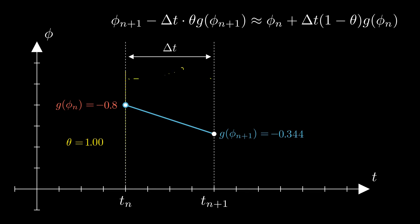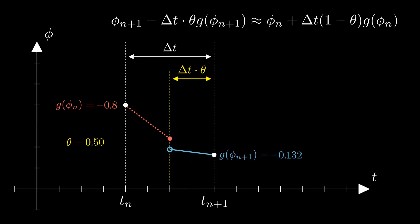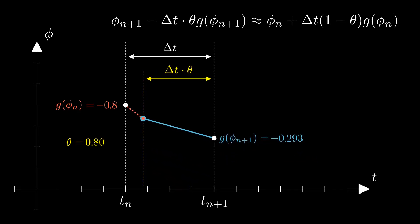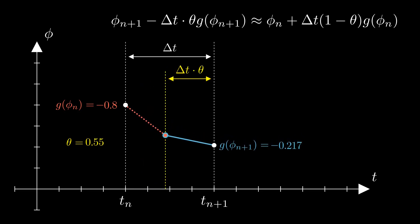Now let's try theta equals 0.5. This is the same as extrapolating backwards only by theta times delta t from phi_n+1, and extrapolating forwards the rest of the way. Since phi_n is fixed, the forward extrapolation is also fixed. But we need the forward and backward extrapolations to be equal as per the equation, so we adjust phi_n+1 until this is true. As we decrease theta, we rely more on forward extrapolation and less on backward. Typically a theta of just over 0.5 is used, giving the superior accuracy of pure Crank-Nicholson with the added stability of implicit Euler.